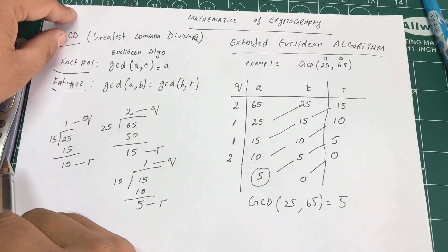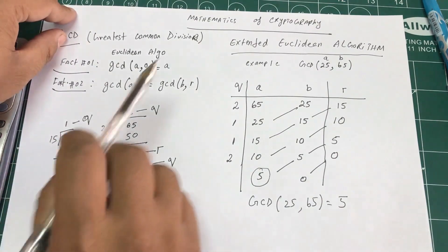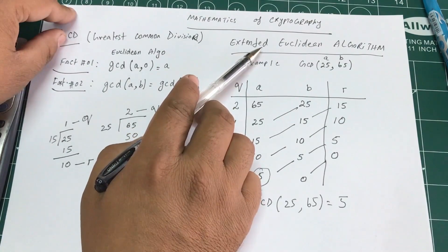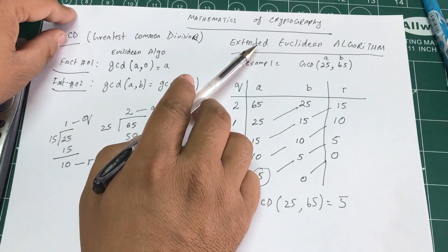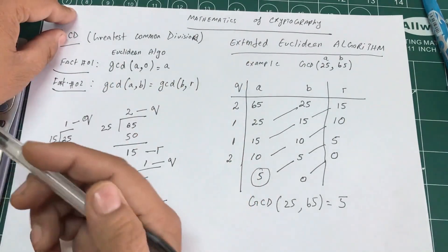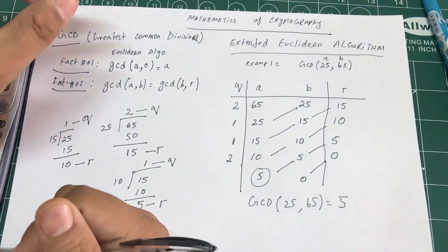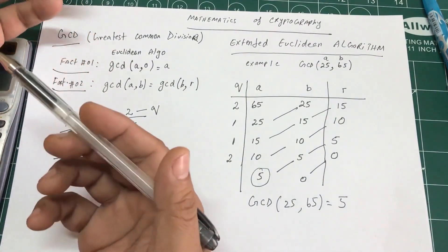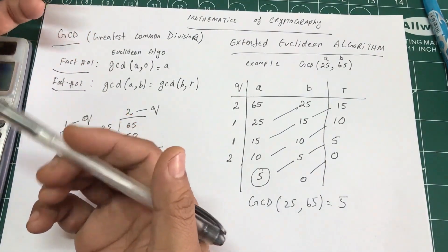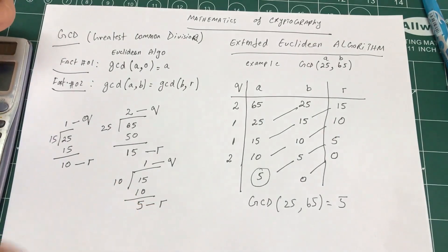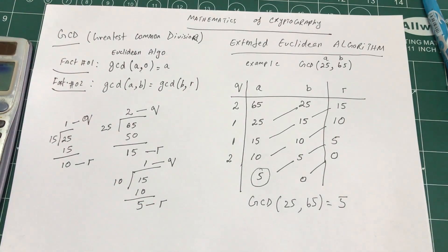This is how you calculate GCD using the Euclidean algorithm. Next we'll look at the Extended Euclidean algorithm, which allows us to find multiplicative inverses — commonly used in AES.